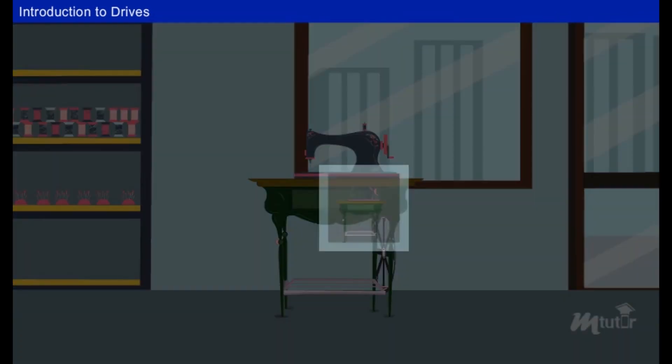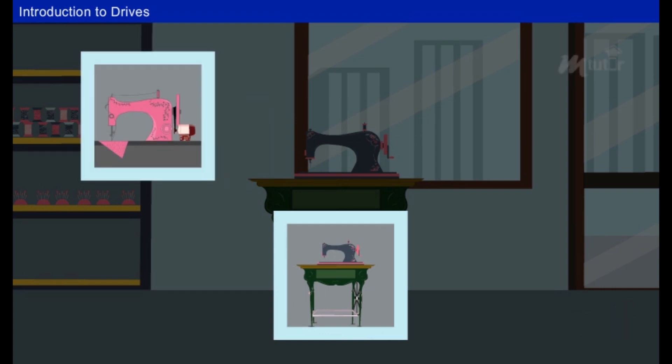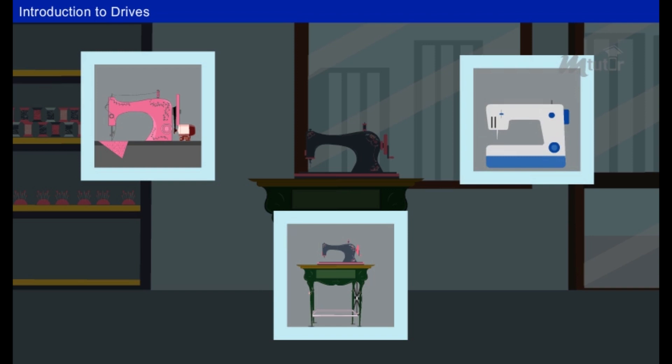Bobby purchased the sewing machine. As years passed by, Bobby upgraded the rope drive to belt drive and later to gear drive for power transmission.